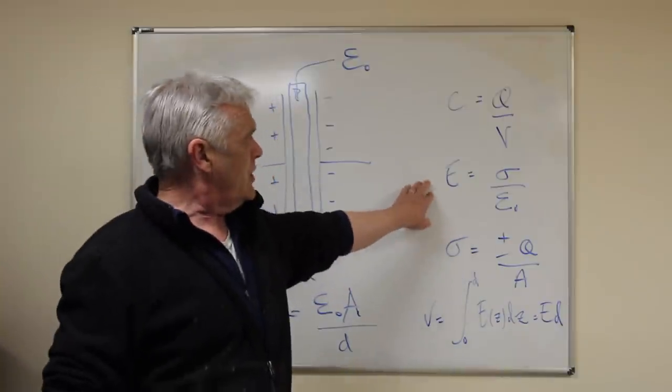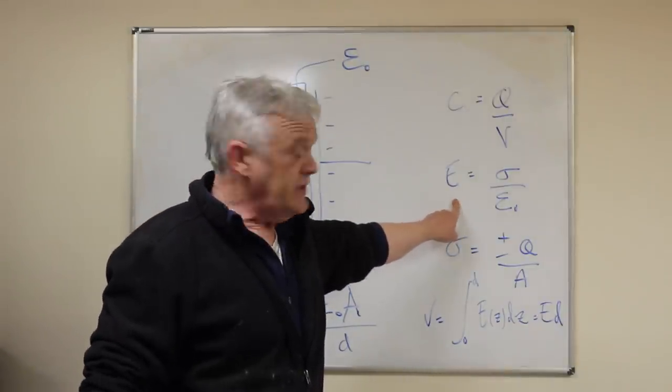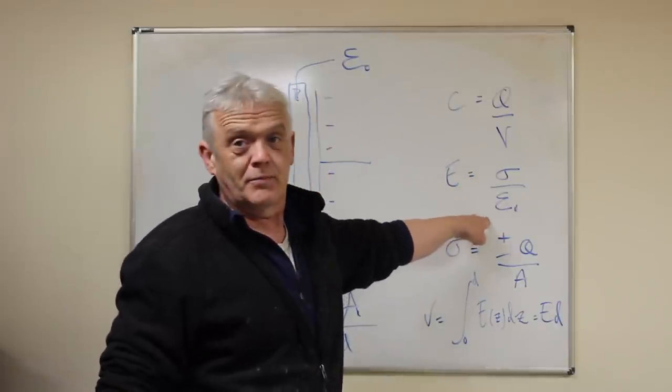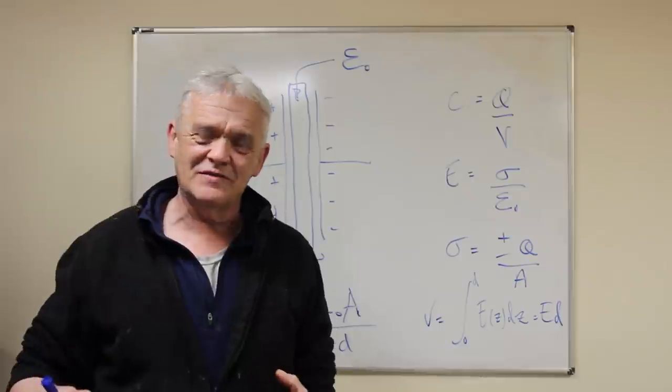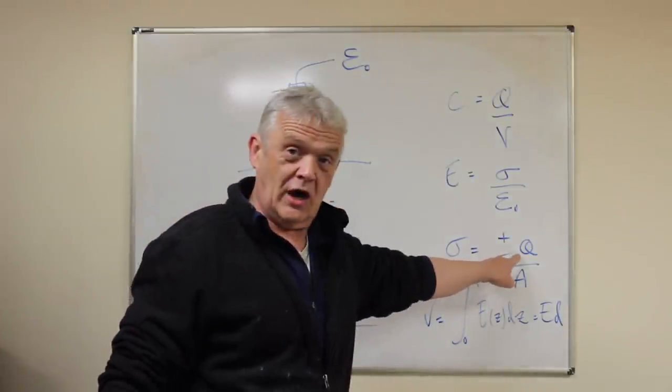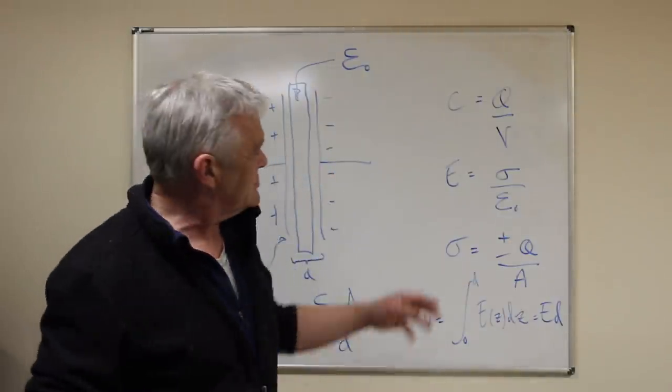It's the same thing here. All we've got is that the electric field is described by the charge density divided by the permittivity. And if you think about it, that makes a lot of sense, because charge density is just the amount of charge divided by the area.